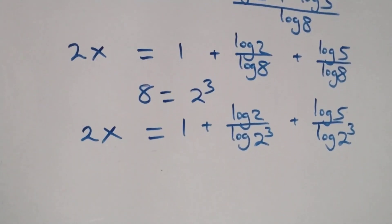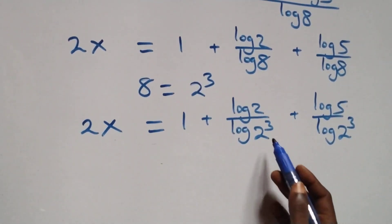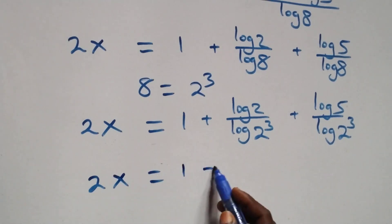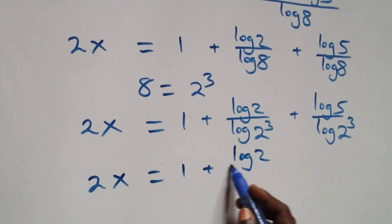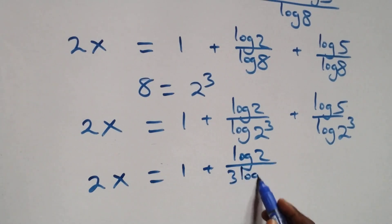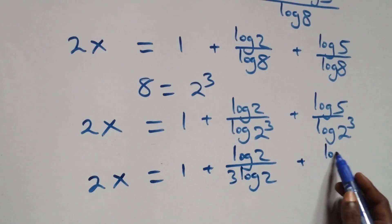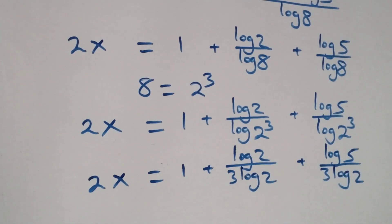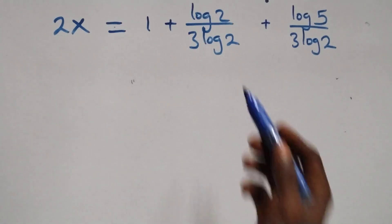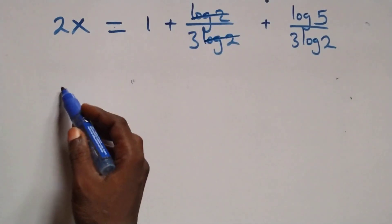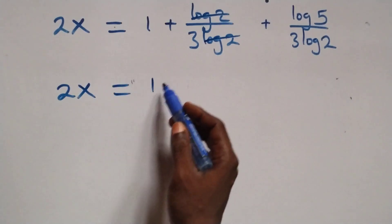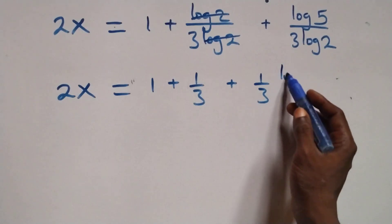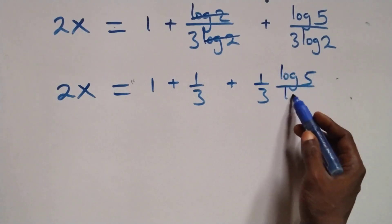The next step is to apply the power rule of logarithm. The 3 comes down, and we have 2x equals 1 plus log 2 over 3·log 2 plus log 5 over 3·log 2. Then the log 2 terms cancel each other giving 1 over 3, so 2x equals 1 plus 1 over 3 plus 1 over 3 times log 5 over log 2.